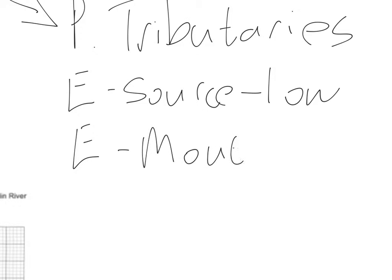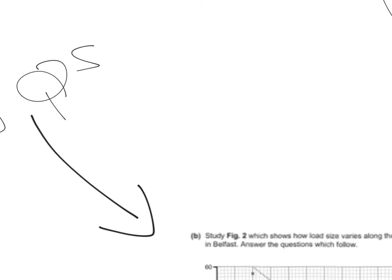At the mouth, a high number of tributaries have added water to the river by this stage and again that increases the amount of erosion and then that causes the various changes that we've discussed earlier on.